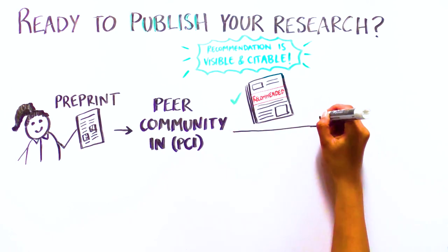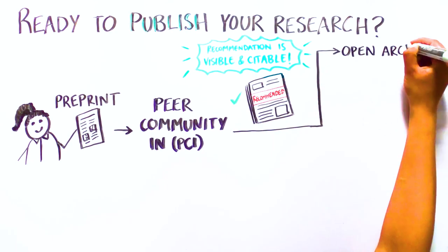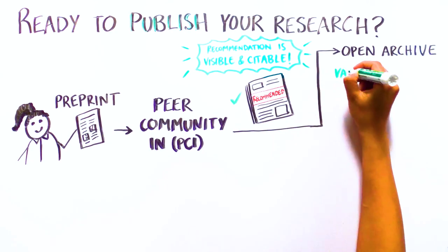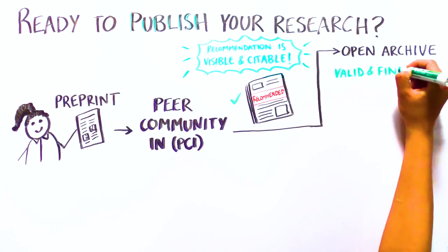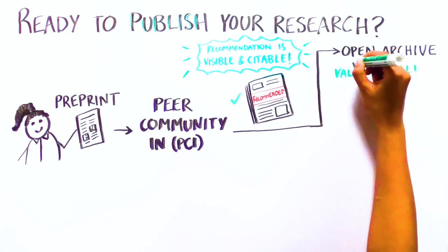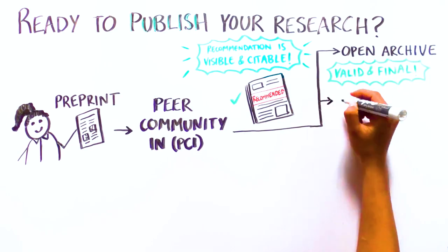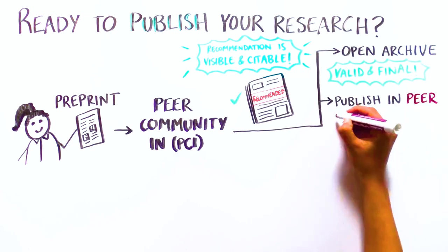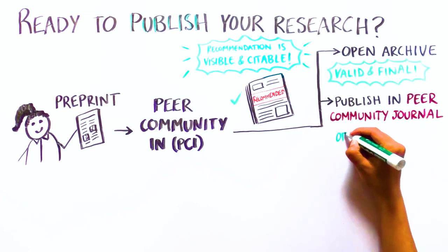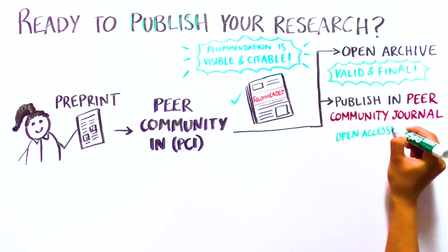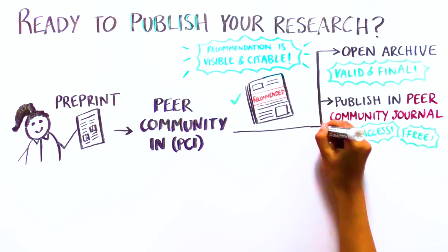Option 1: Leave your PCI-recommended preprint in the Open Archive. It is a valid, final, and citable article. Option 2: Immediately publish your article in Peer Community Journal, our open-access, completely free journal.